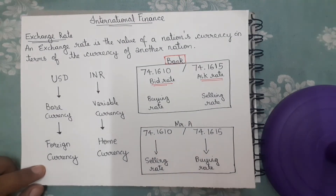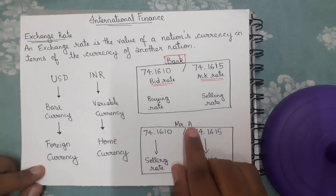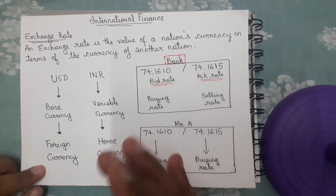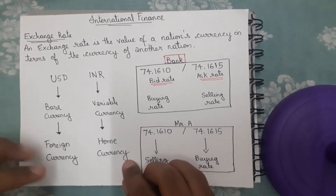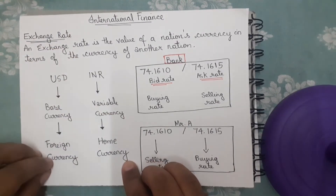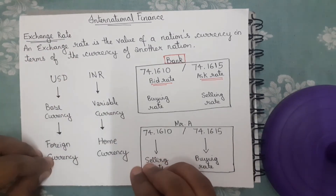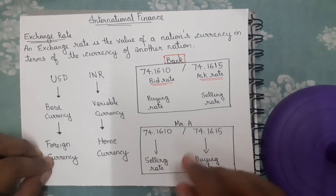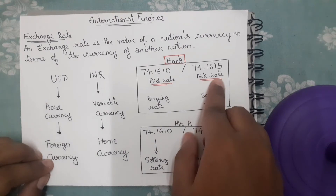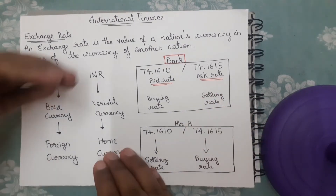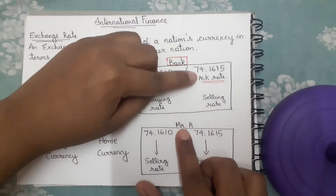For example, Mr. A wants to go to the US for business, so he goes to the bank to convert his Indian rupees into US dollars. The bank would sell him US dollars at the ask rate — so the bank is selling US dollars to Mr. A at the ask rate.